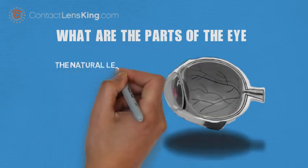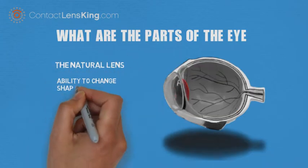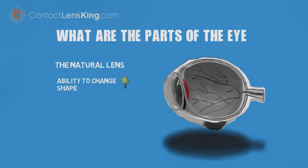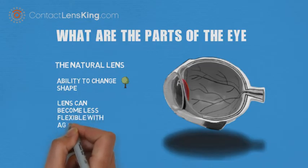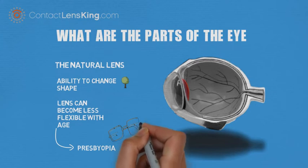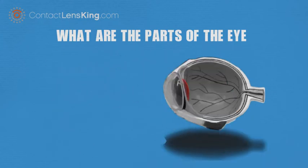The natural lens. The eye's natural lens has the ability to change shape as one focuses on nearer or distant objects. As one ages, the lens becomes less flexible, leading to presbyopia. This condition is the reason why people look to use bifocal glasses or reading glasses.